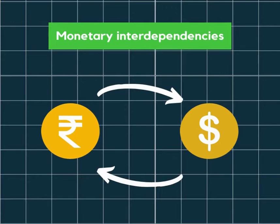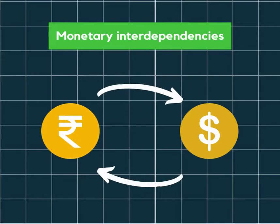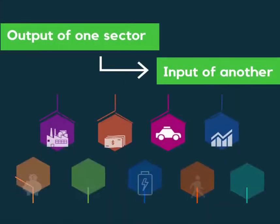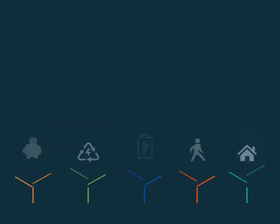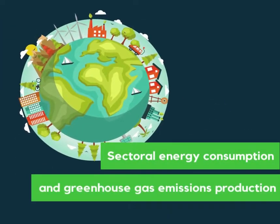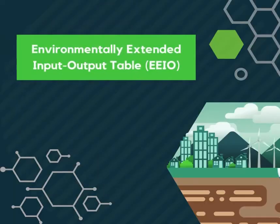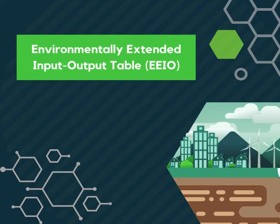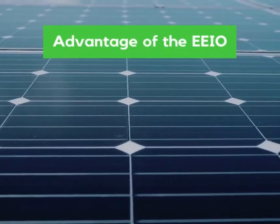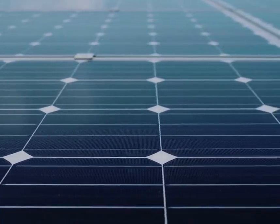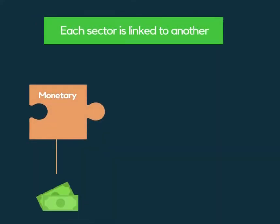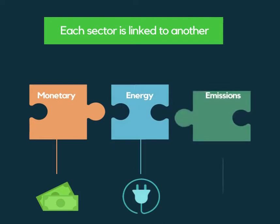This table shows the monetary interdependencies of sectors in an economy. The output of one sector becomes the input of another sector, and can be extended to include information on sectoral energy consumption and greenhouse gas emissions production. This extension is referred to as the Environmentally Extended Input-Output Table. An advantage of this table is that it provides information on how each sector is linked to another in monetary, energy and emissions terms.